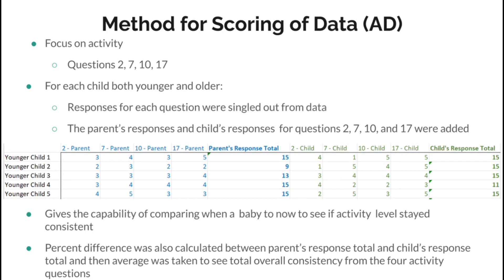For the scoring of the data, we focused on questions 2, 7, 10, and 17, as these were the questions that pertained to activity level. For each child, both younger and older, the responses for each of the four questions were singled out, and both the parents' and children's responses were totaled up. This scoring gives us the capability of comparing activity level from when a child was a baby until now to see if it stayed consistent. The average percent difference between parents' response total and children's response total across all four activity questions was calculated for both the younger and older children's data.